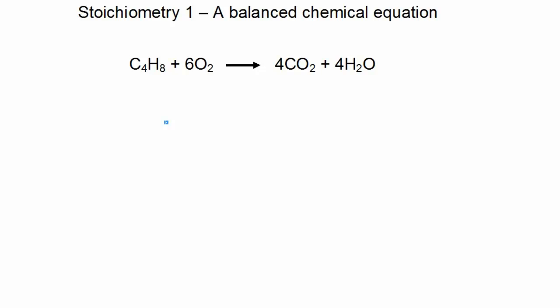I'd like to start off stoichiometry by showing you features of a balanced chemical equation. Here we have the balanced chemical equation C4H8 reacting with O2, which are these two molecules, the reactants, to produce CO2 and H2O. These molecules on the right are the products.